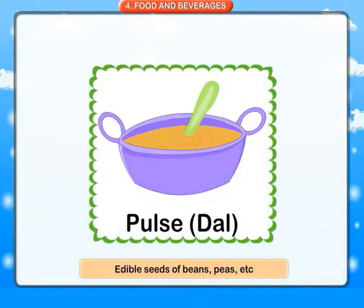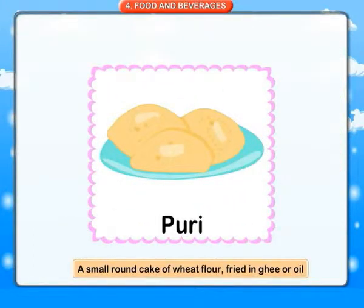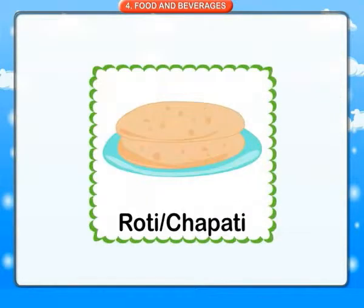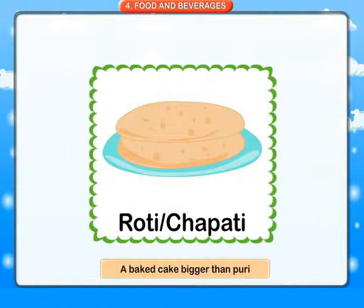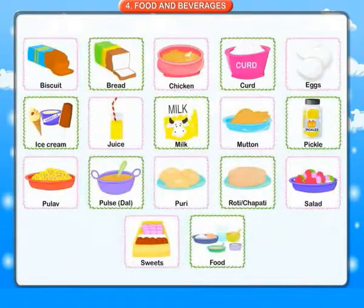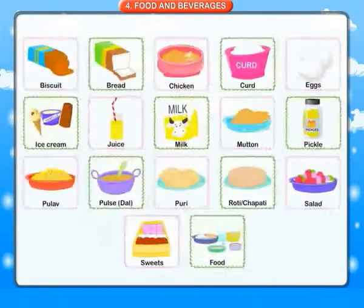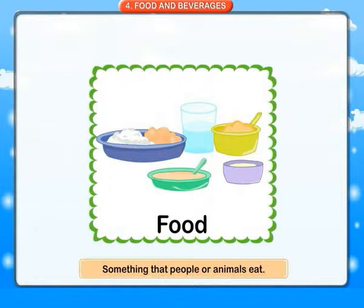Dal: edible seeds of beans, peas, etc. Puri: a small round cake of wheat flour fried in ghee or oil. Roti or chapati: a baked cake bigger than puri. Salad: chopped raw vegetables and fruits. Sweets: small shaped pieces of sweet substance. Food: something that people or animals eat.